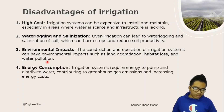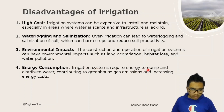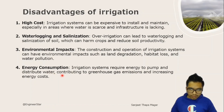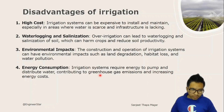Energy consumption is also a concern. Irrigation systems require energy to pump and distribute water, which contributes to greenhouse gas emissions and increases energy costs.